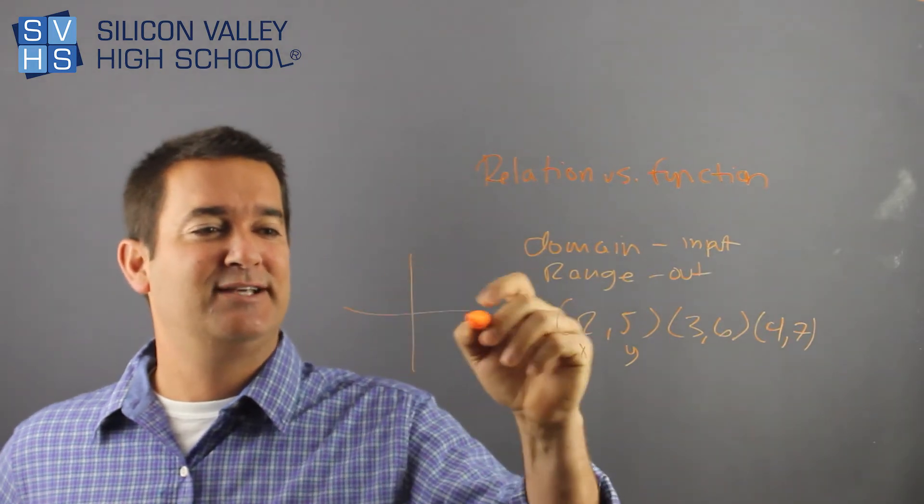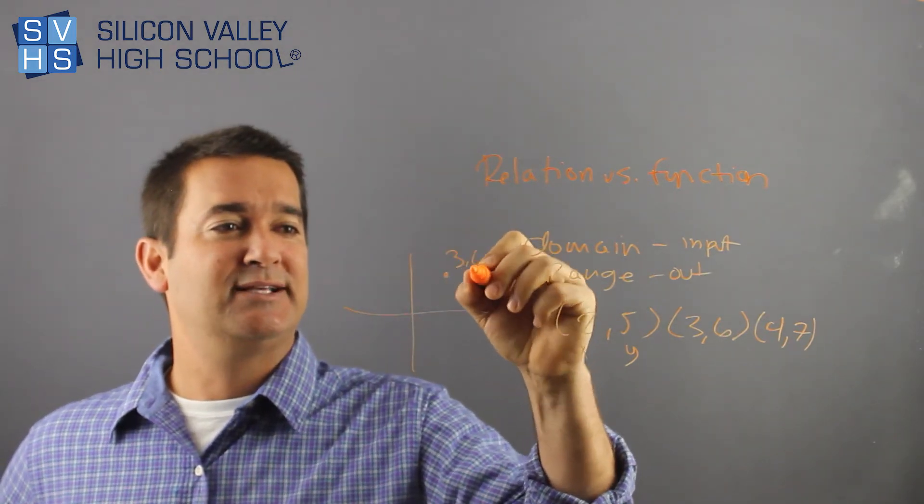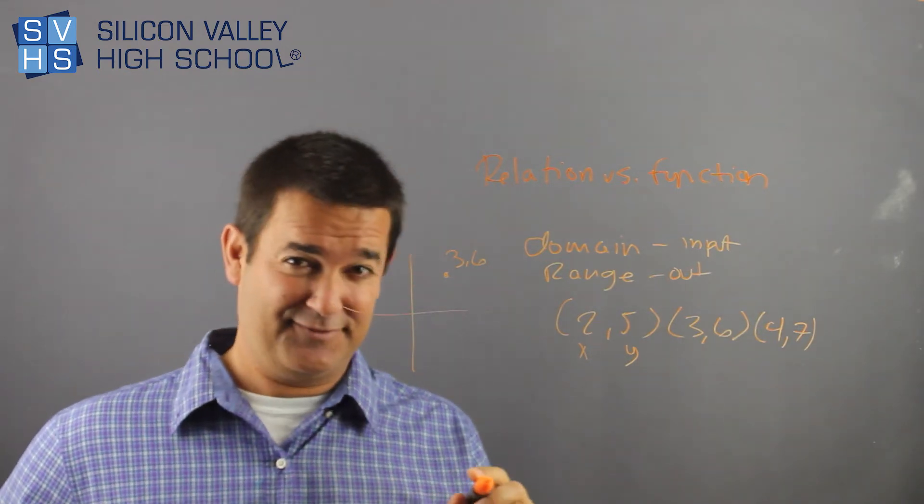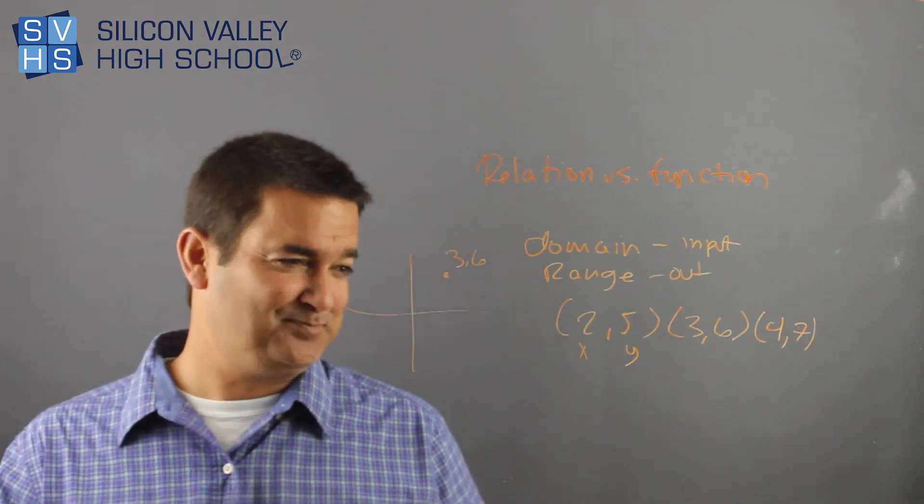And same thing on a graph. So if they said, here's a 0.36 and they said, what's the domain and range? Domain is 3. You're too slick to fall for that. And range is 6. And that's it.